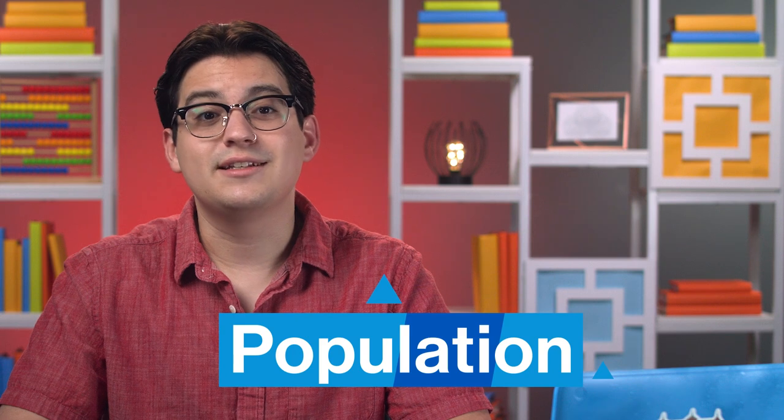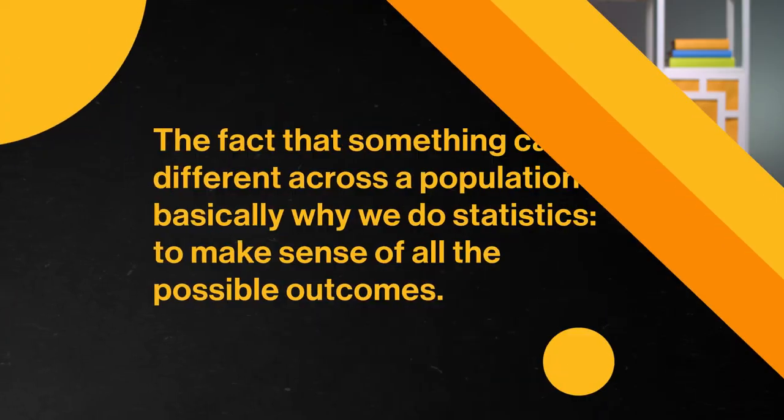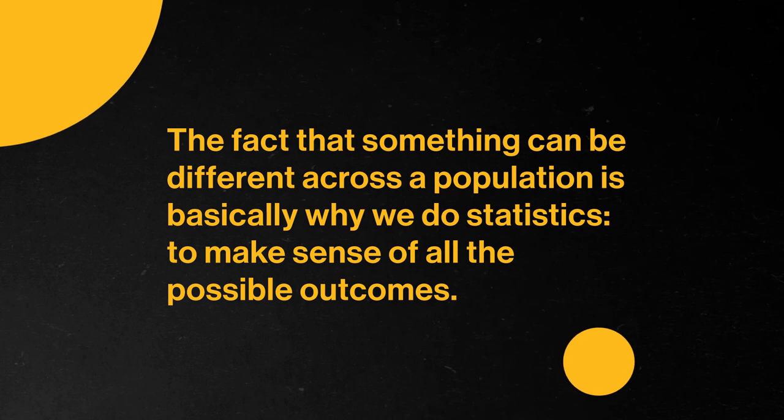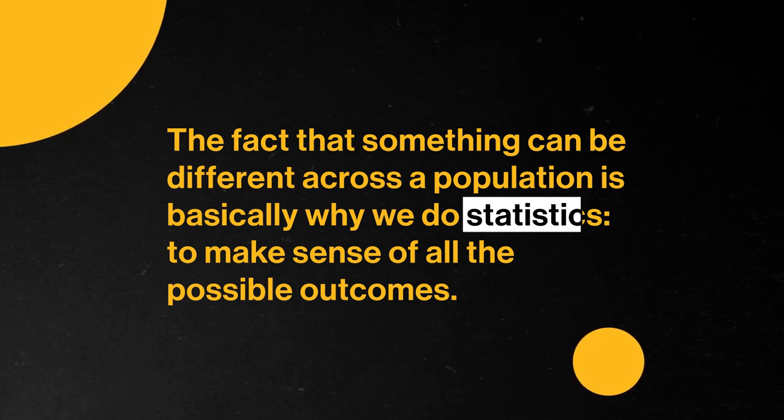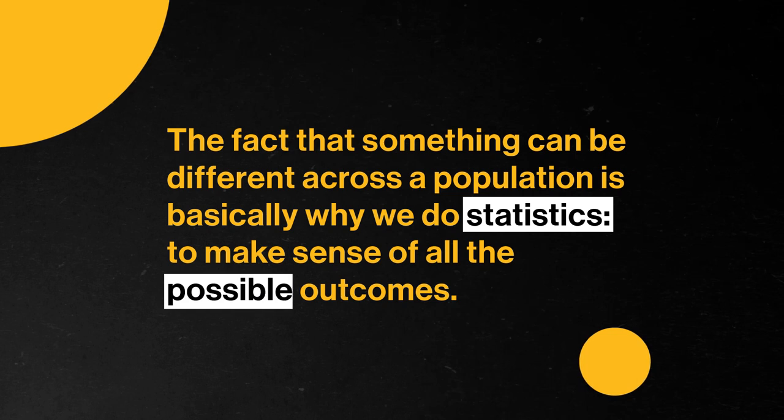We often find in the world around us that things vary across a population, which in statistics refers to some collection of stuff — whether it's a population of people, animals, or those beanie babies from the 90s that will make a comeback any day now, at least if you ask my parents. Whatever our population is made up of, stuff is rarely all exactly the same. And the fact that something can be different across a population is basically why we do statistics — to make sense of all the possible outcomes.